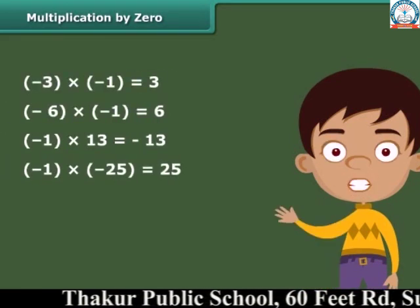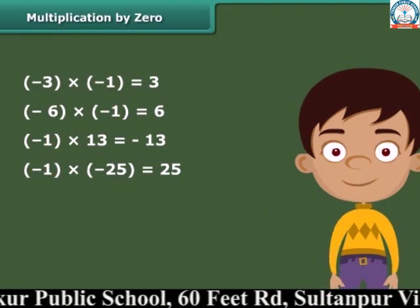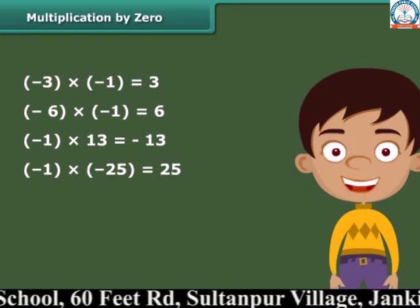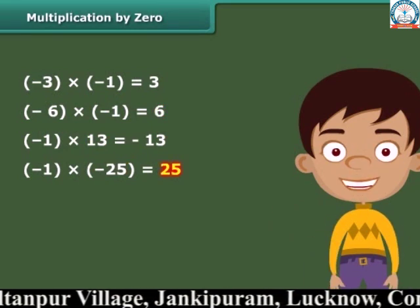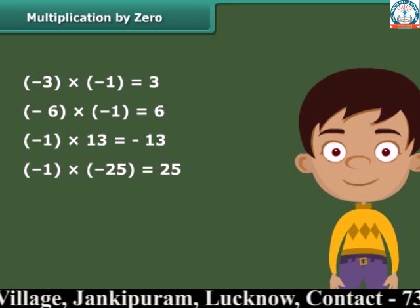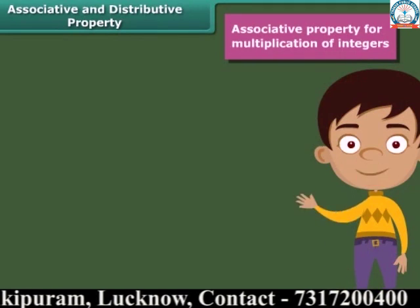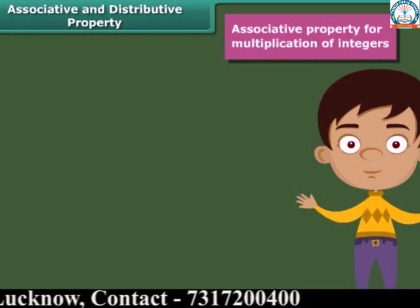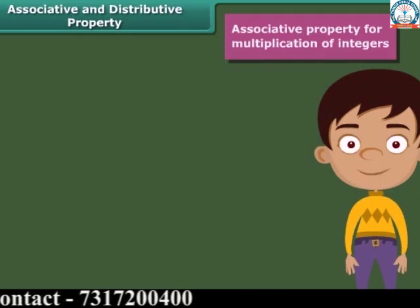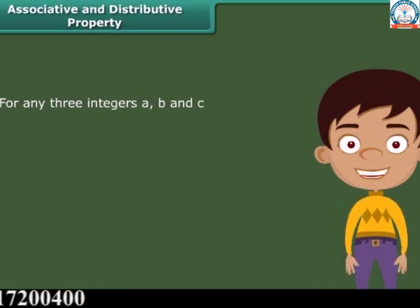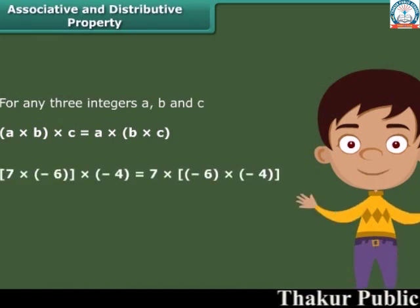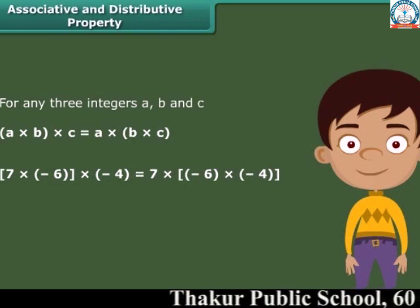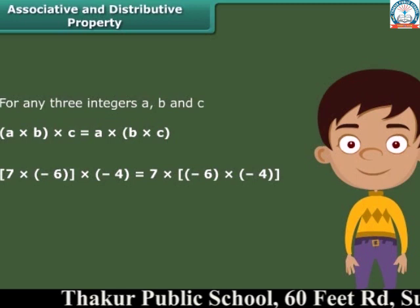When we multiply any integer by minus 1, we get the additive inverse of that integer. For example, minus 3 becomes 3, minus 6 becomes 6, 13 becomes minus 13, and minus 25 becomes 25. The product of three integers does not depend upon the grouping of integers — this is called the associative property for multiplication of integers. For any three integers A, B and C, A times (B times C) is equal to (A times B) times C.